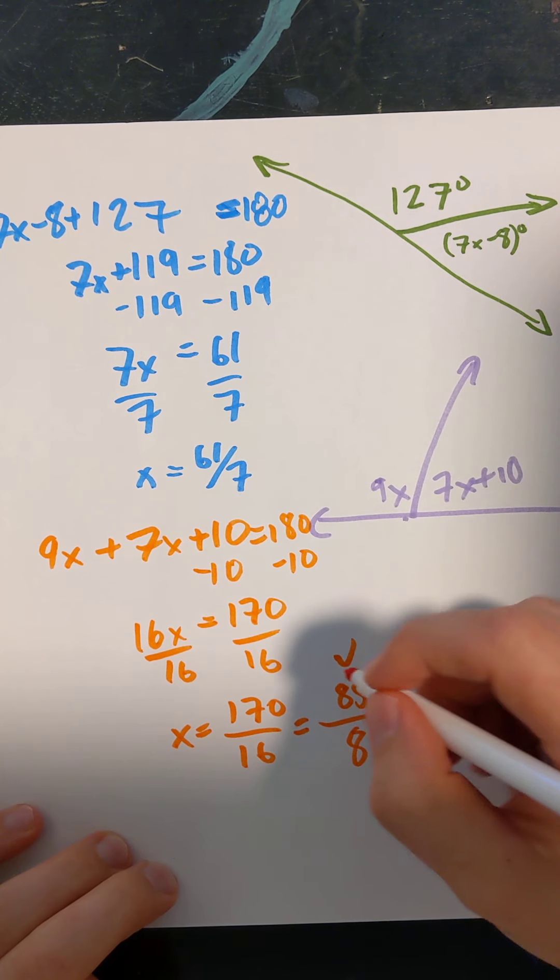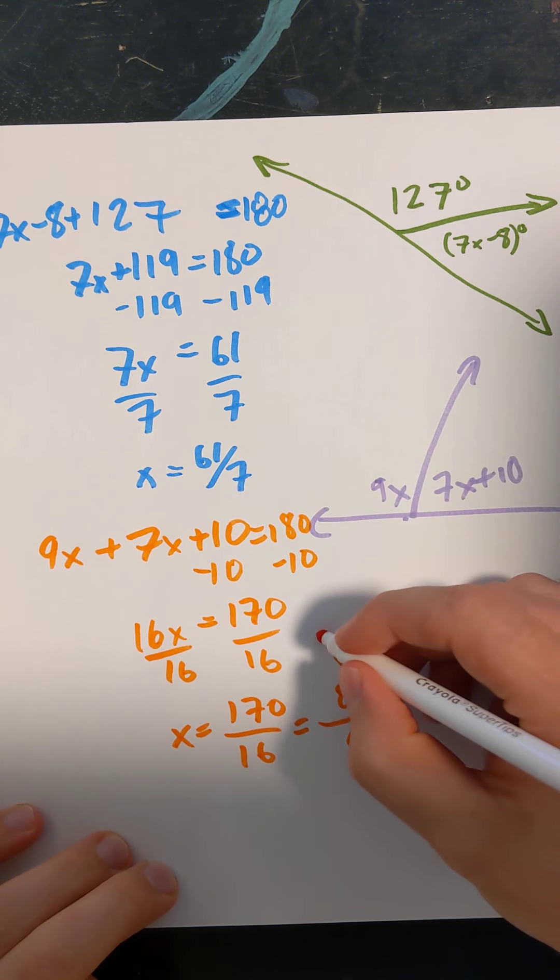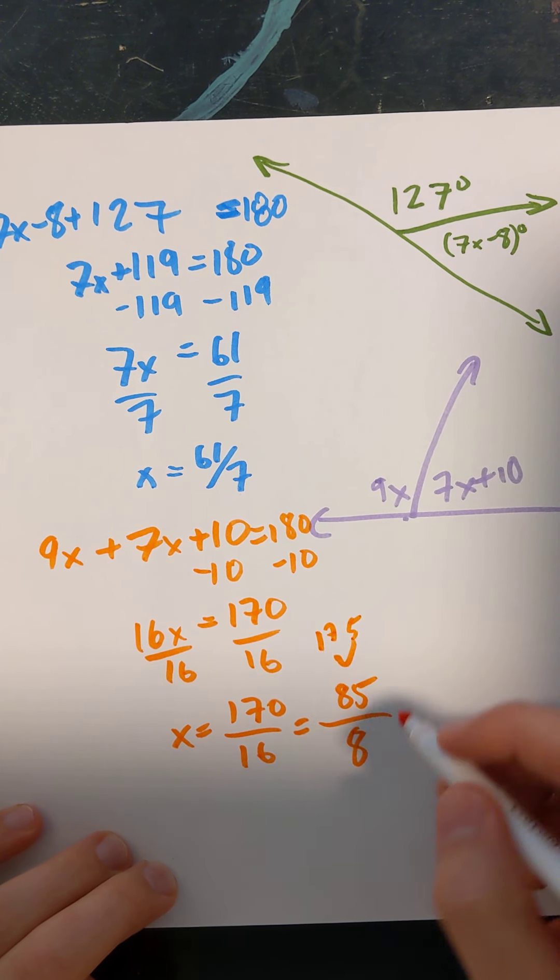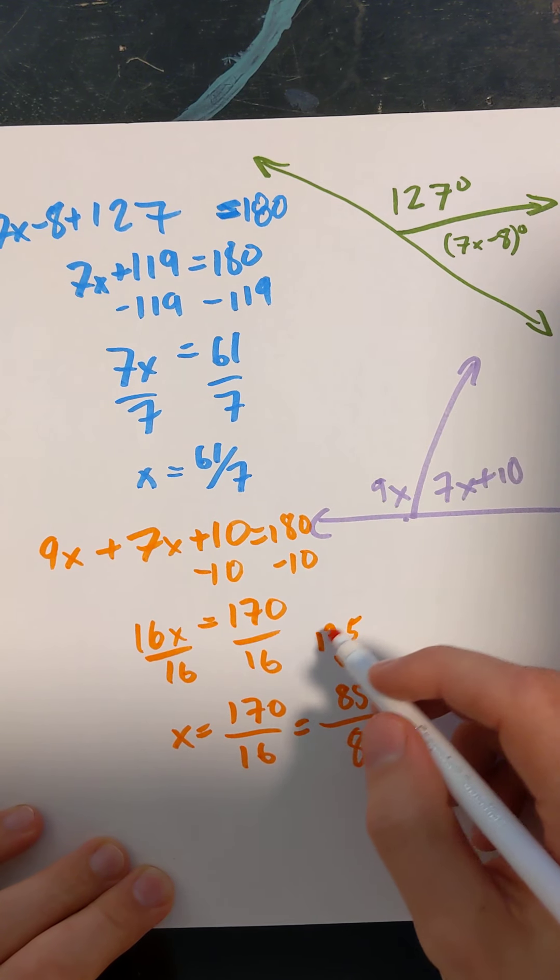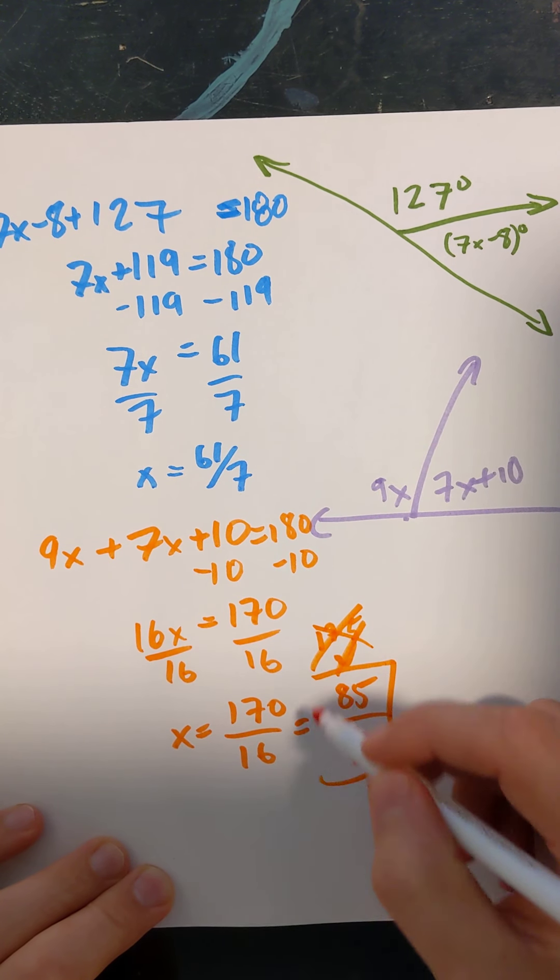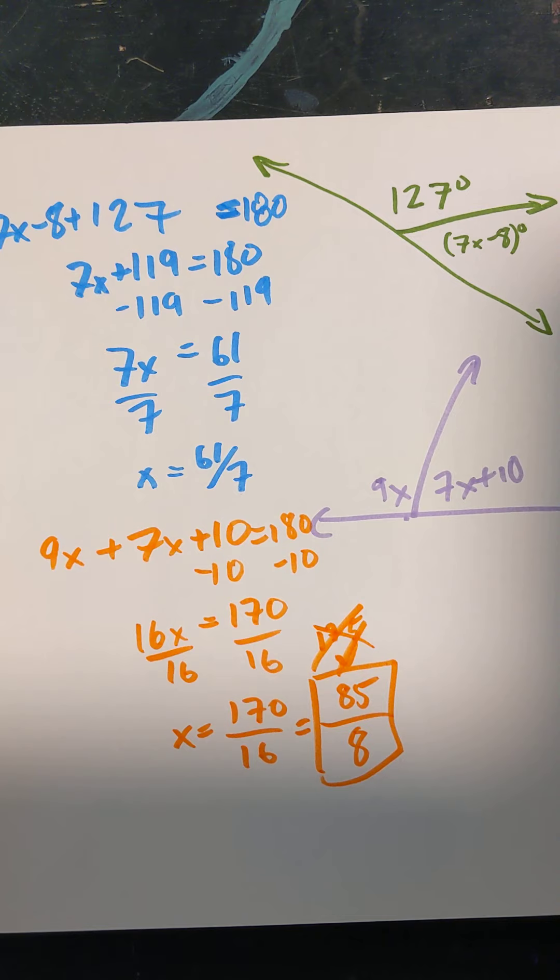Okay, 85 is 17 times 5, so I know 17 and 5 don't go into 8. So 85 over 8 is my final answer.